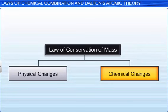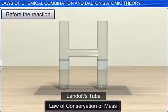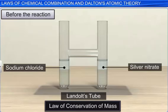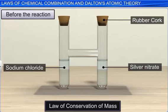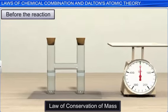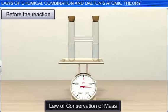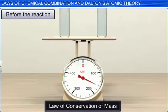Now, let's verify the part about chemical changes. We'll fill sodium chloride and silver nitrate in the two limbs of Landolt's tube. Now, let's seal both the limbs with a rubber hook. Let's weigh the tube and note the weight. This is the weight of reactants before the chemical reaction.